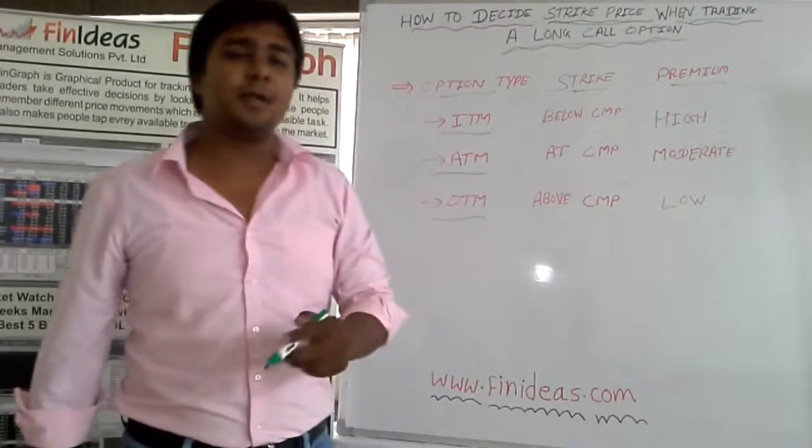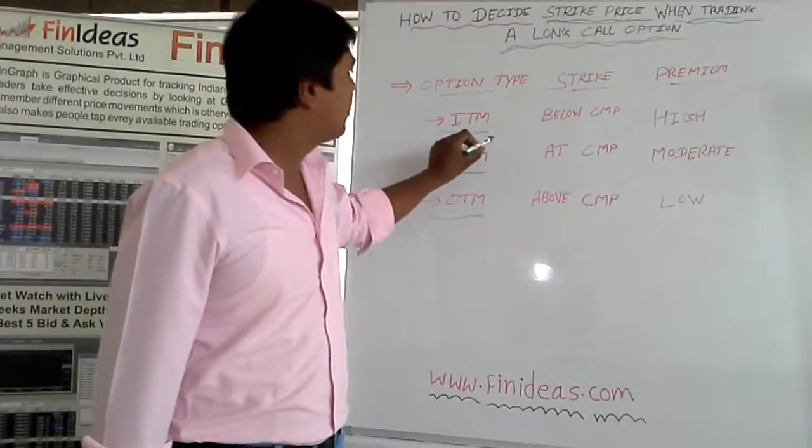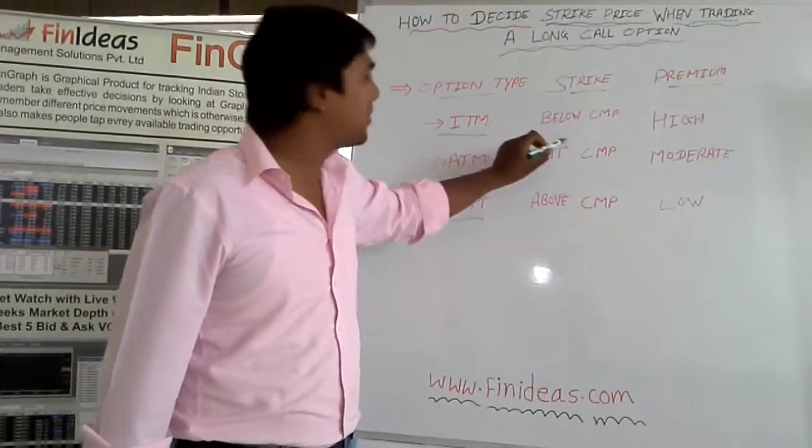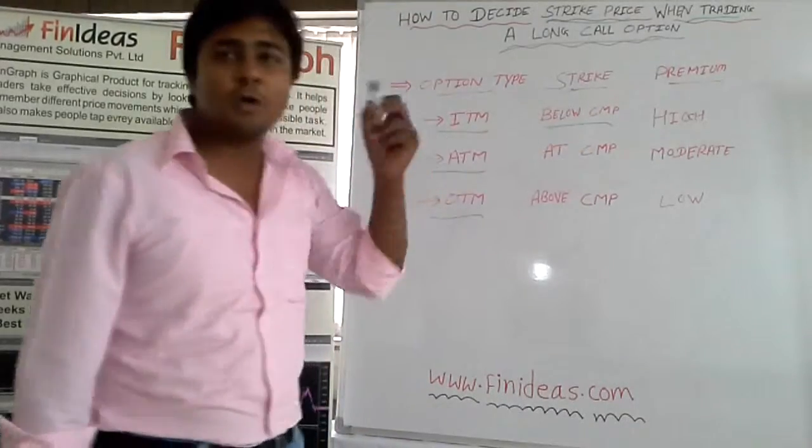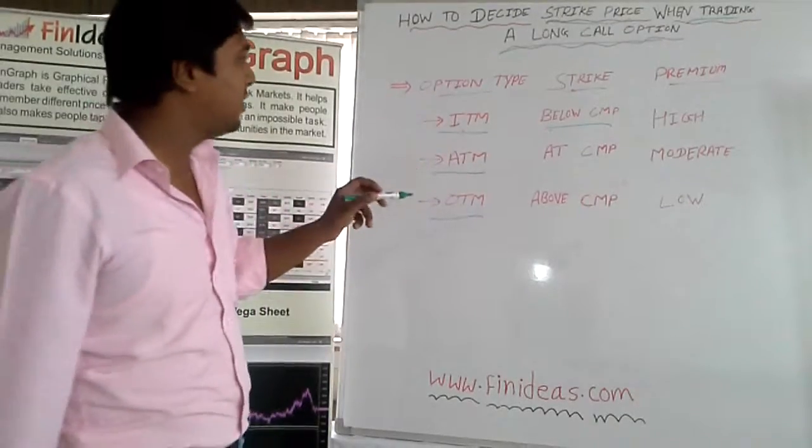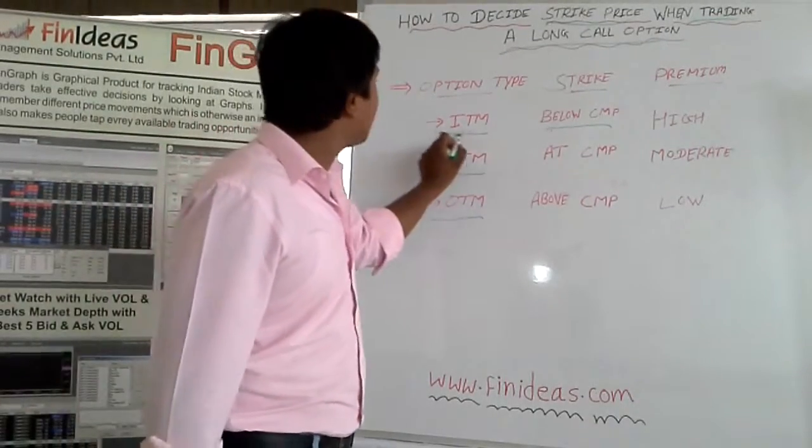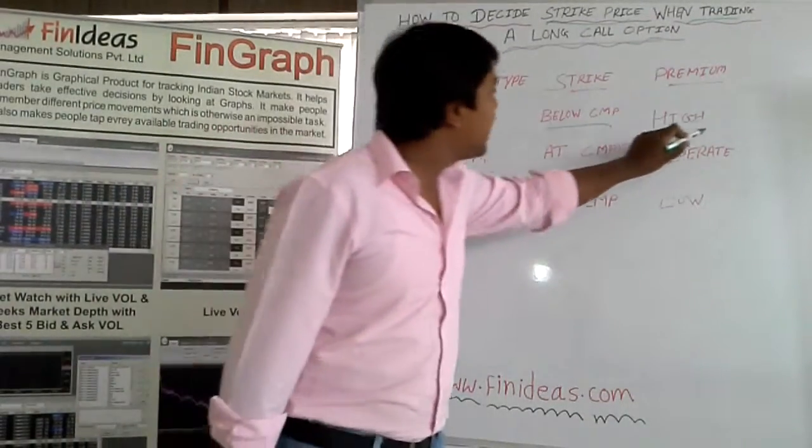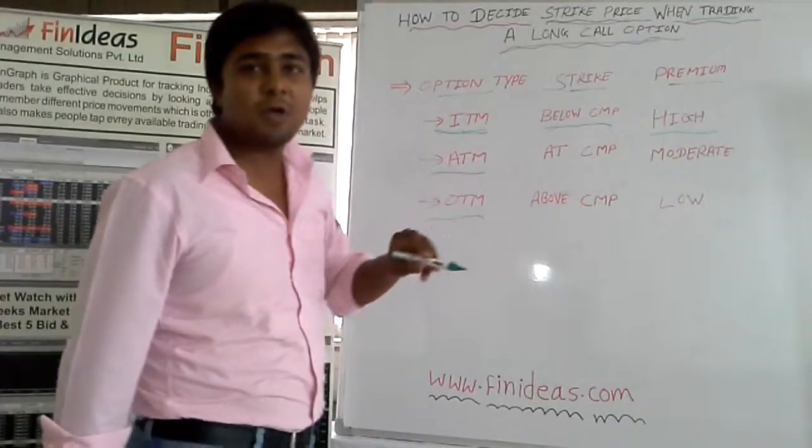To identify ITM strike price, all strike prices below the current market price (CMP) for call options are in the money (ITM) strike prices. When trading ITM strike prices, we are paying higher premium because we are having intrinsic value in them.